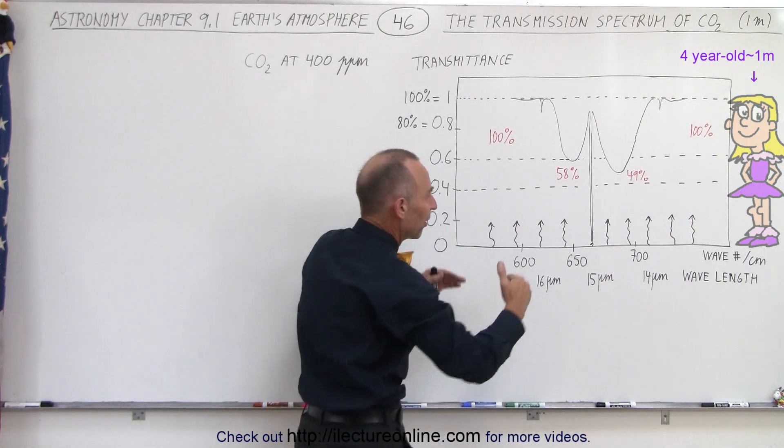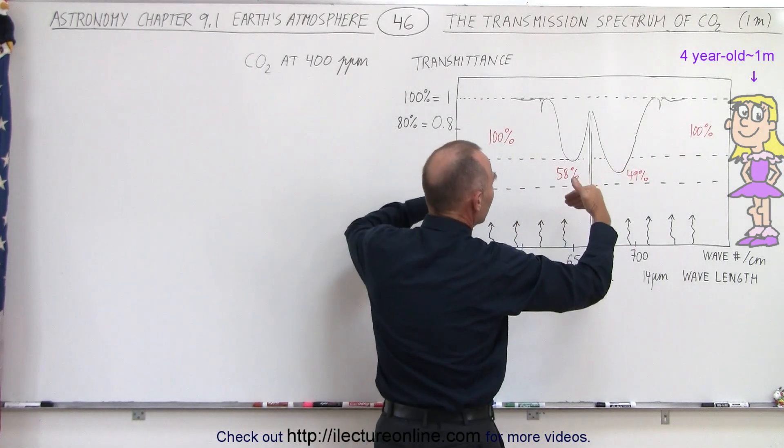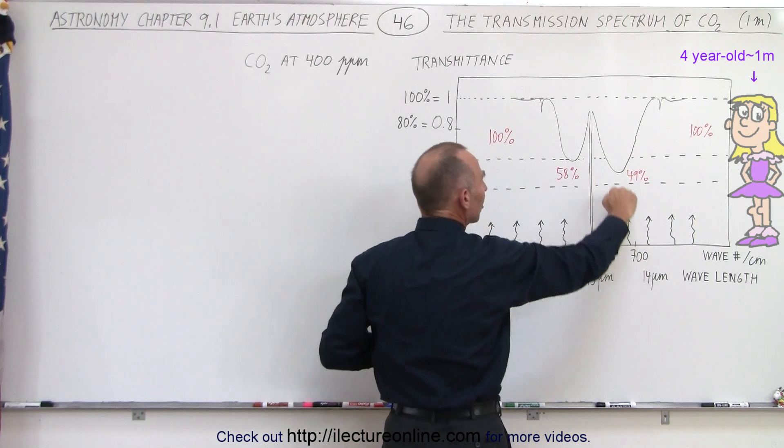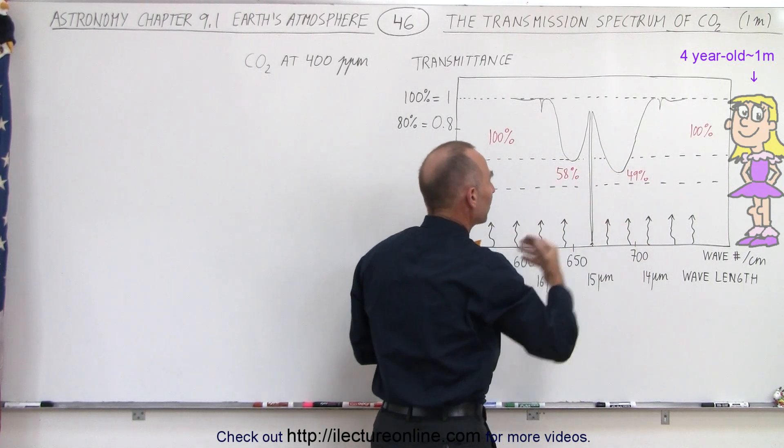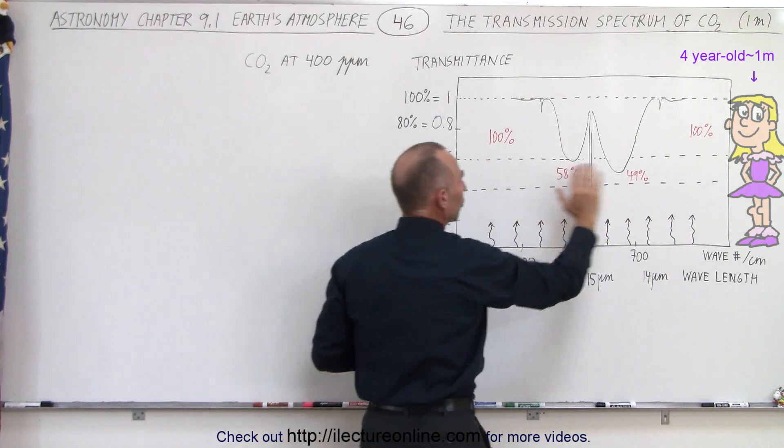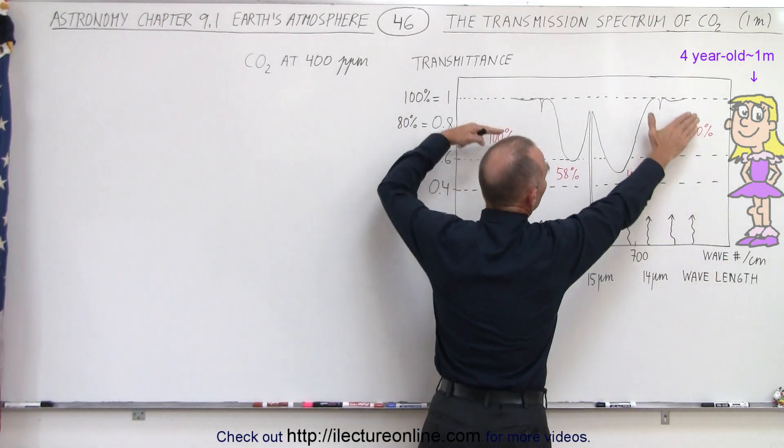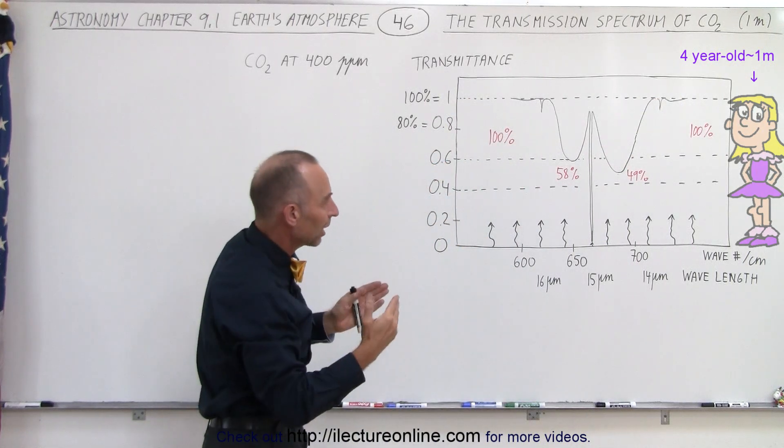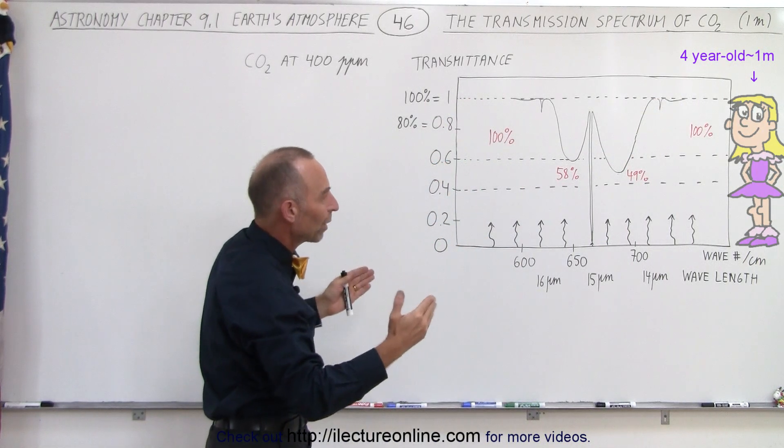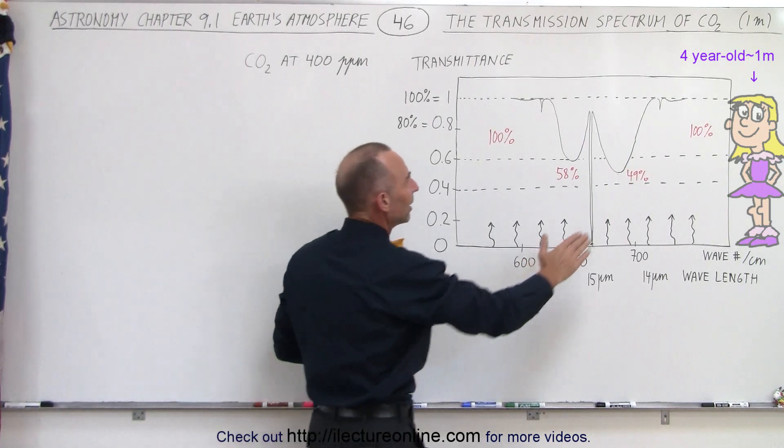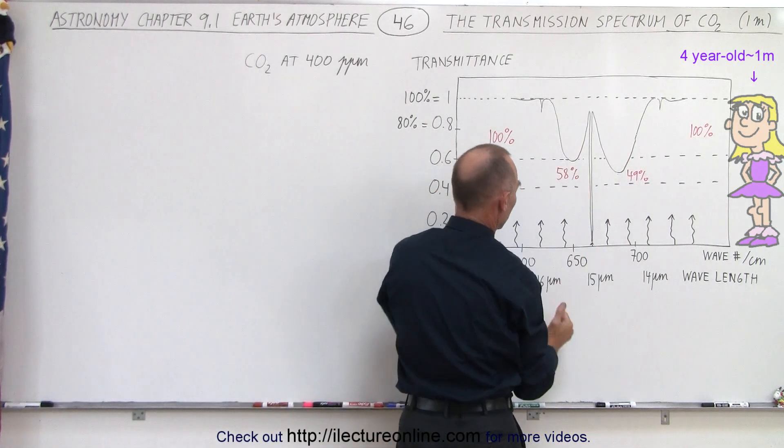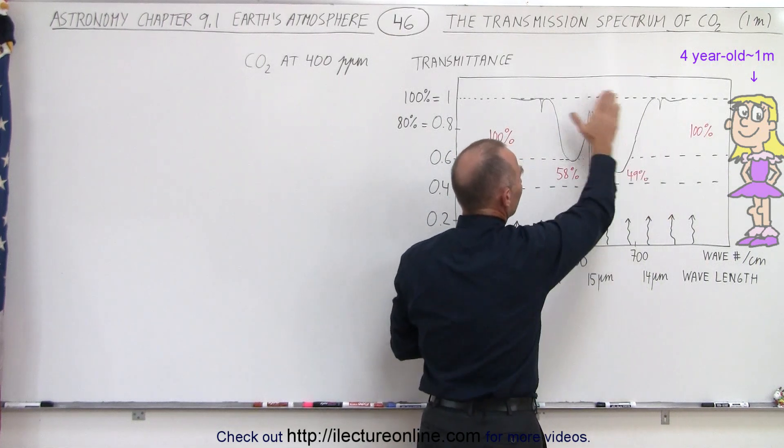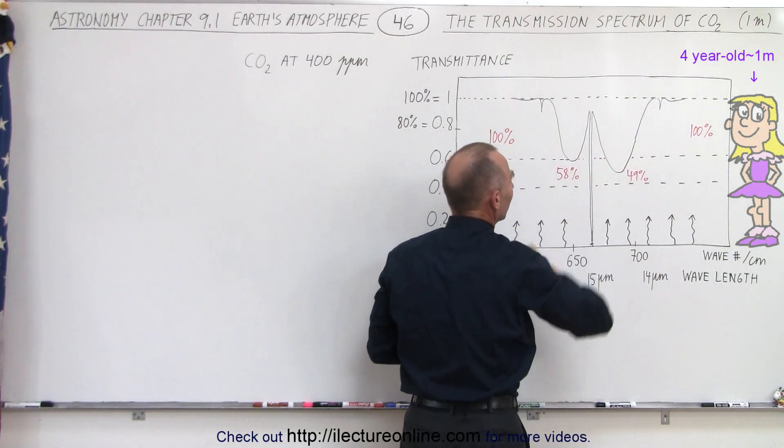So the numbers we see here are transmission numbers, the amount of radiation from 100% leaving the surface that reaches at least one meter in height without being absorbed. To the left and to the right, you can see that virtually 100% of the radiation reaches one meter because the effectiveness of carbon dioxide in absorbing those wavelengths is much less than it is in this particular range. So between 16 and 14 micrometers, most of that radiation is affected by carbon dioxide to the levels that you see here.